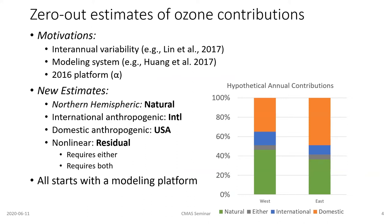Here I'm talking about a system set up to create what I'm calling zero-out estimates of ozone contributions. We know there's inter-annual variability, and the EPA wants to look at the year 2016 as an important part of the policy assessment for ozone. If the modeling system matters, we want to see what happens in the CMAC modeling system that was recently extended to work at northern hemispheric scales. We want to use our latest 2016 platform emissions. So all of those things have changed and we want to create new estimates.